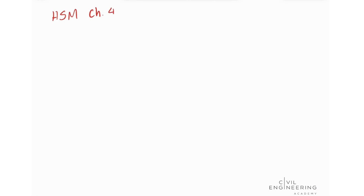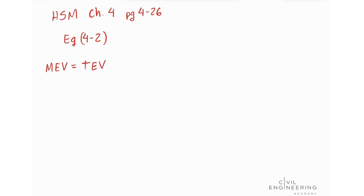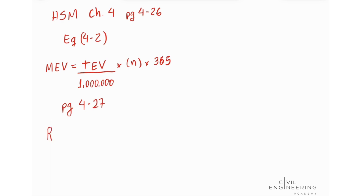We're going to look at Highway Safety Manual Chapter 4, page 4-26, equation 4-2. This equation says that our Million Entering Vehicles (MEV) is equal to the total number of entering vehicles (TEV) divided by 1 million, times the number of years of crash data, times 365. We're also going to use the equation on page 4-26 to calculate the rate, which is equal to the number of accidents observed divided by the MEV.